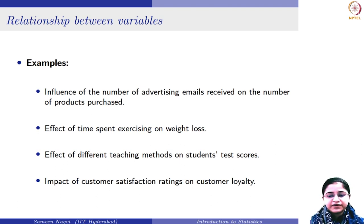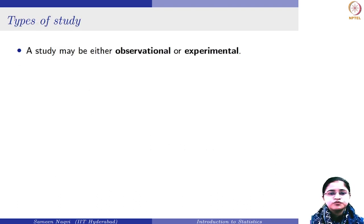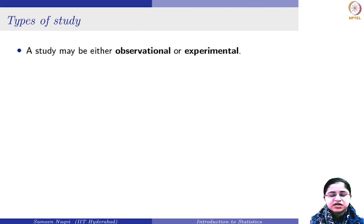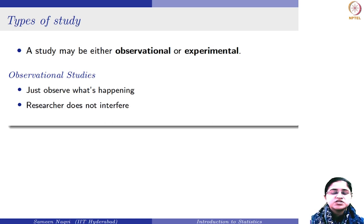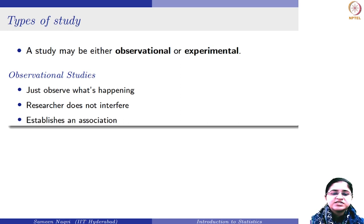With this background, we are now going to move to different types of studies. Any study can be broadly classified as either observational or experimental. As the name itself suggests, observational studies are those in which we simply observe what is happening — the researcher does not interfere in the process, and at the end you can establish an association between different variables.